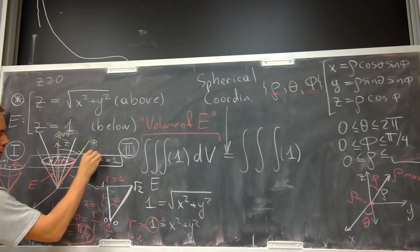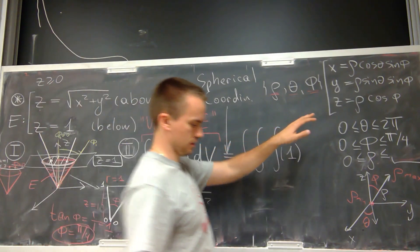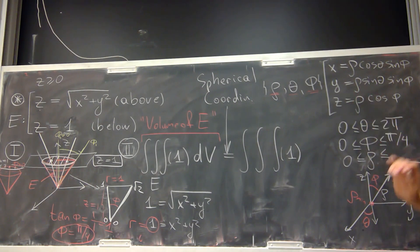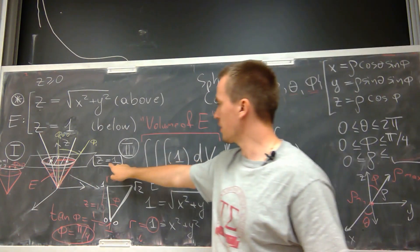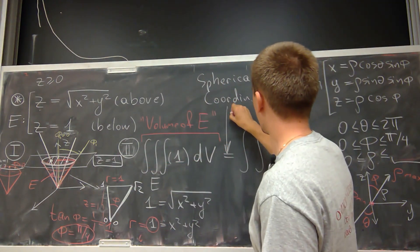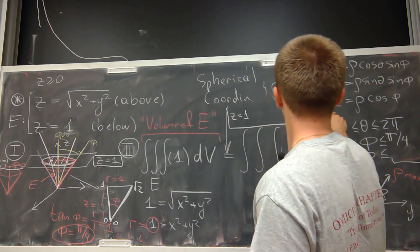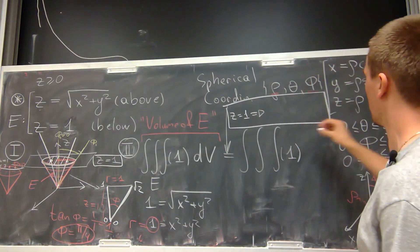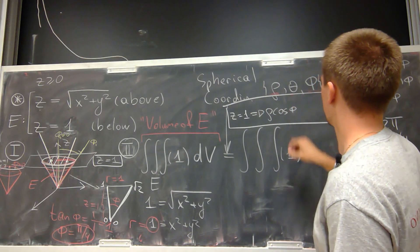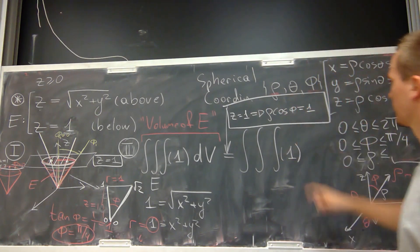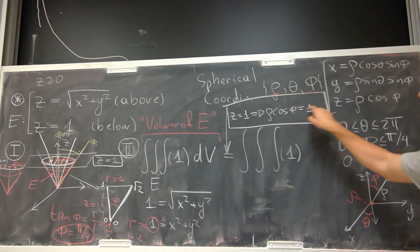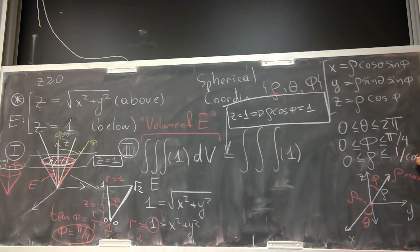The rays intersect the plane z equals 1, so I rewrite z equals 1 in spherical coordinates by replacing z with ρ cosine φ. Then ρ cosine φ equals 1, and solving for ρ gives ρ bounded above by 1 divided by cosine φ. So ρ goes from 0 to 1/cos(φ).